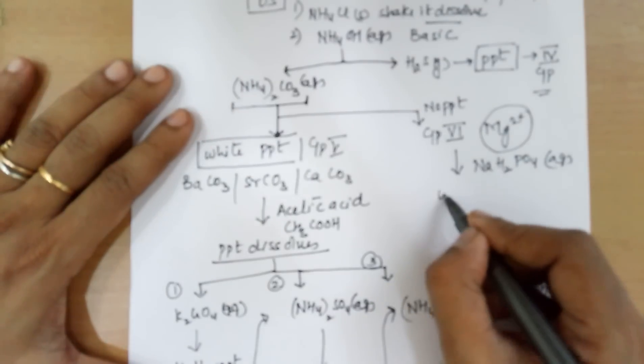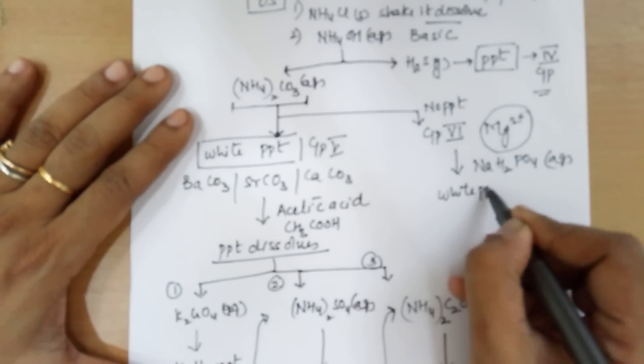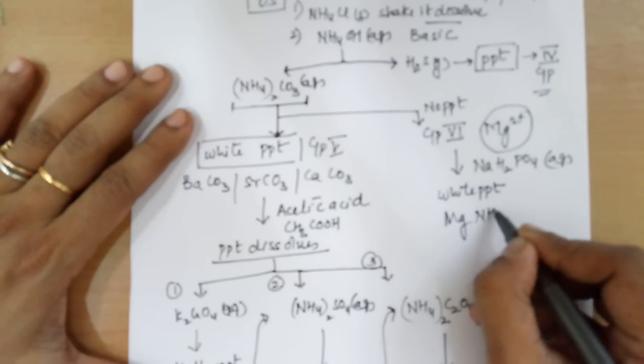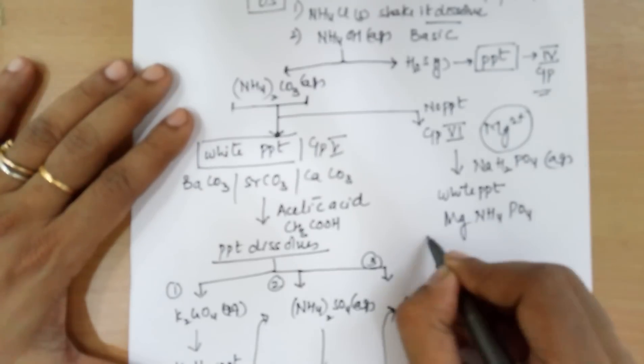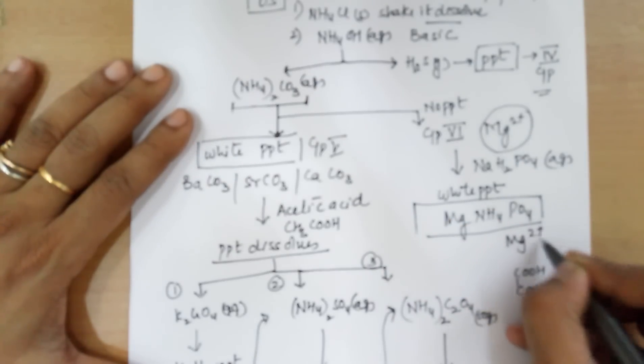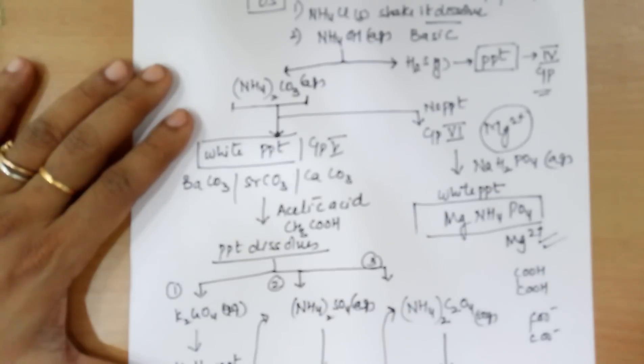Leading to the formation of a white PPT of magnesium ammonium phosphate and confirmatory test for magnesium ions. Which is group 6.